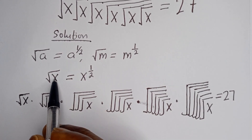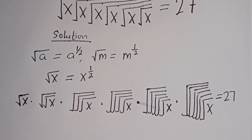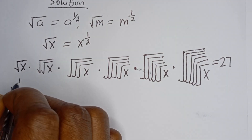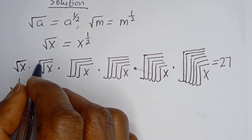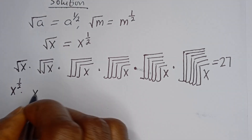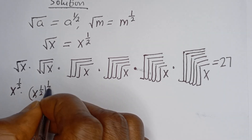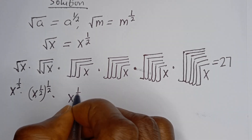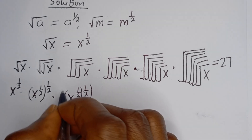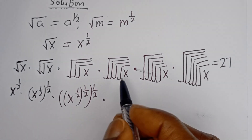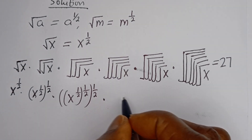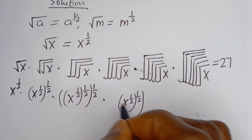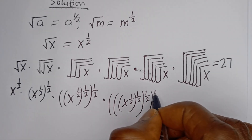Now since square root of s equals s to the power of 1 over 2, let's transform each term. Square root of s is s to the power of 1/2. Square root of square root of s is s to the power of 1/2 to the power of 1/2. With three nested square roots, we get s to the power of 1/2 to the power of 1/2 to the power of 1/2.